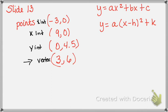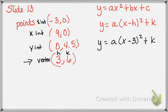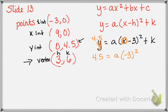We're going to start with knowing where our vertex is. The vertex is labeled as h and k. We're going to plug in what we know: h is 3 and k is 6. Then we can pick another point and find an x and y. Let's use the point where x is 0, so I'm going to put 0 in for x. Then y has to be 4.5.